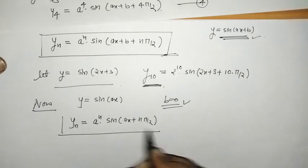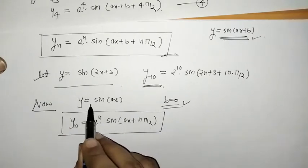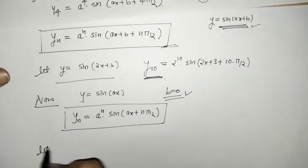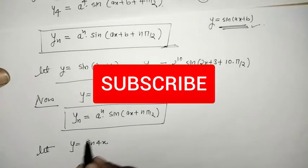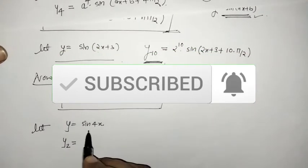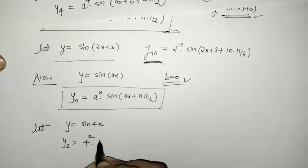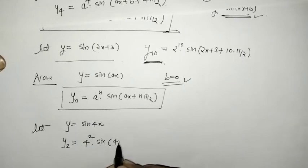This is also the nth derivative when y = sin(x). Now consider y = sin(4x) and we need to find y2, the second derivative. Using the formula with a = 4 and n = 2: y2 = 4²·sin(4x + 2π/2).